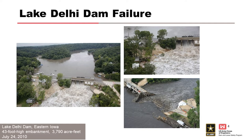Let's look at several case studies. This is Lake Delhi Dam near Delhi, Iowa. This dam failed on July 24th, 2010. One of the spillway gates was not operational and the dam underwent internal erosion. It was overtopped, causing a 200-foot portion of the earthen embankment and roadway to breach, emptying the entire reservoir, which had a total capacity of 3,790 acre-feet. Luckily no life loss occurred, but about 8,000 people were evacuated downstream.